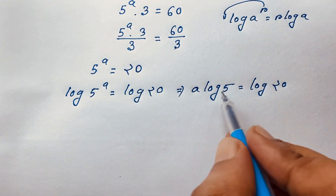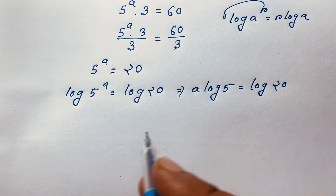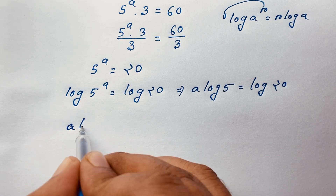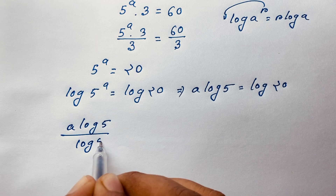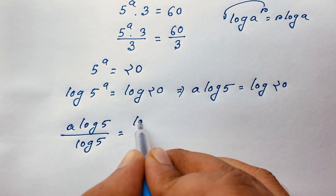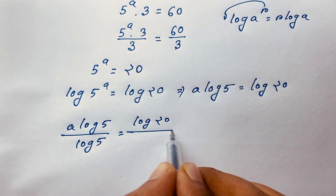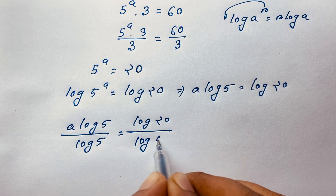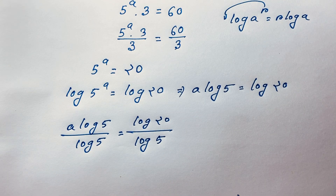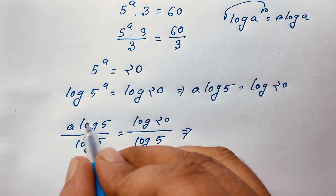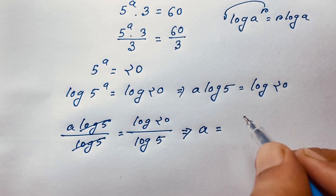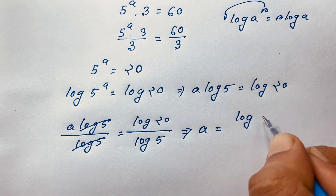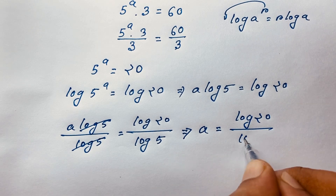I divide both sides by log 5. So A times log 5 over log 5 is equal to log 20 over log 5. The log 5s cancel out, and we find that A is equal to log 20 over log 5.